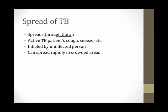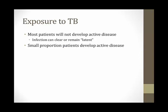Tuberculosis spreads through the air. If a patient with active TB coughs or sneezes, they can pass on bacteria when inhaled by an uninfected person. This is particularly a problem in crowded areas where people have poor nutrition, a weak immune system, and are very susceptible to infection. Once exposed to TB, most people will not develop active disease — the body will either completely clear the bug or wall it off, entering latency. Only a very small proportion develop active tuberculosis.